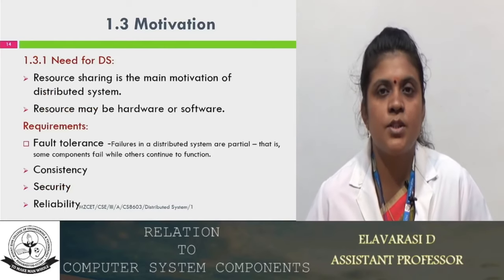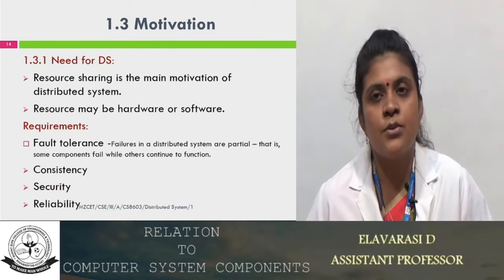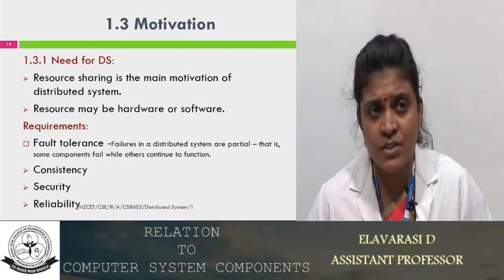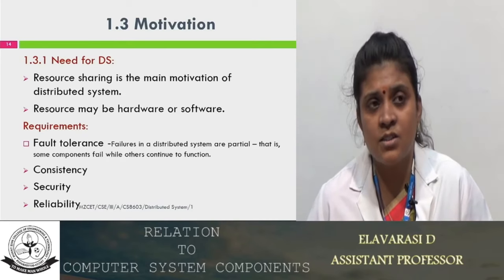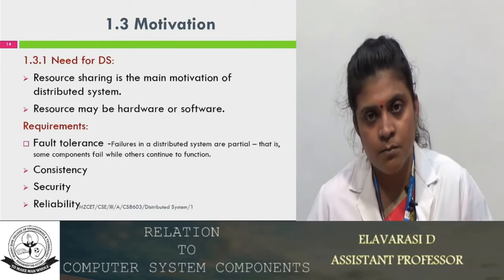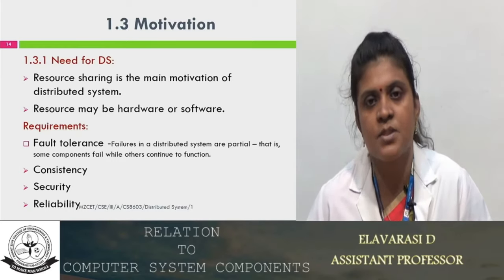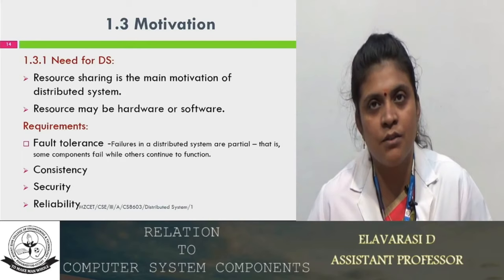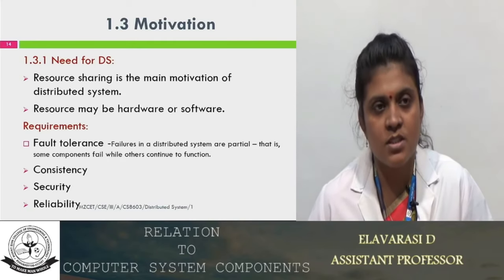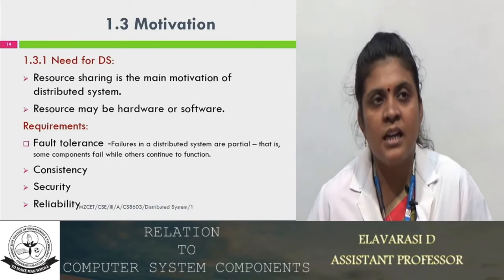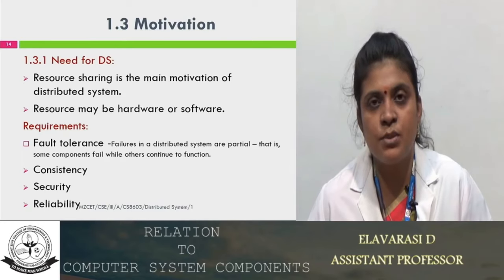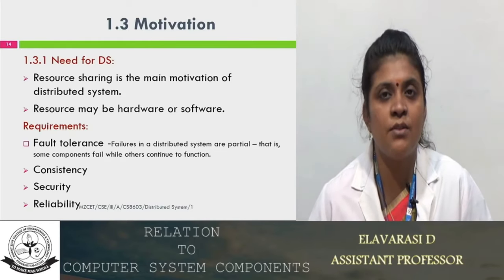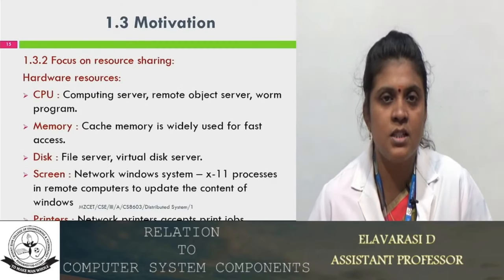What is the need for the distributed system? The main motivation is resource sharing. A resource can be either hardware or software. We can have different processors — for example a supercomputer placed in one location that is underutilized can be utilized. Fault tolerance is another requirement: if a component fails, the function is still able to continue its process and we have to ensure the consistency of the data. Security is a big issue because in a distributed system the data is replicated and placed on different geographical locations, so we have to ensure data security and reliability.